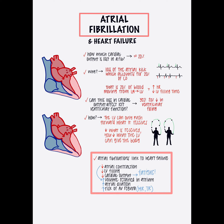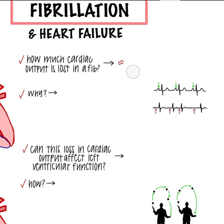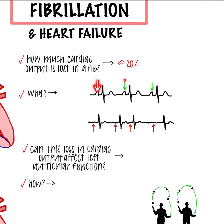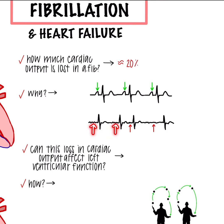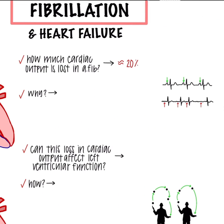Welcome to an overview of how atrial fibrillation is related to heart failure. About 20% of cardiac output is lost in AFib. If you look at the EKG, you see that you lose your P waves going from sinus rhythm to AFib. You now have these fibrillatory waves, and that's where the atrial kick is lost.